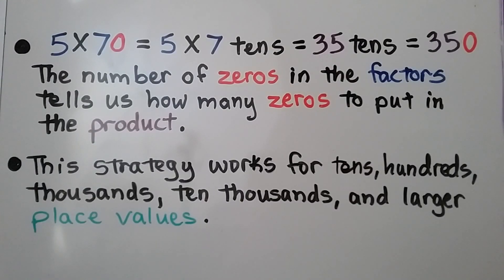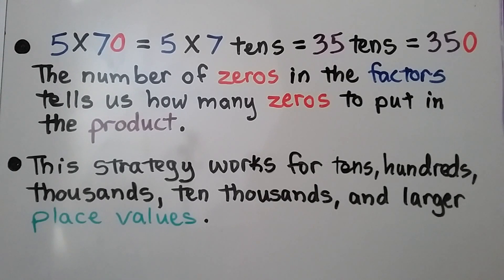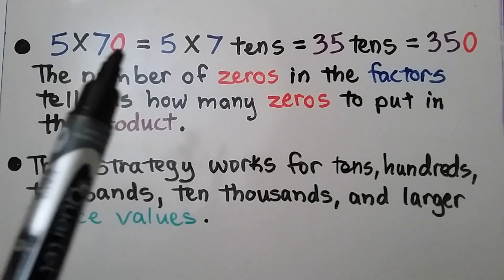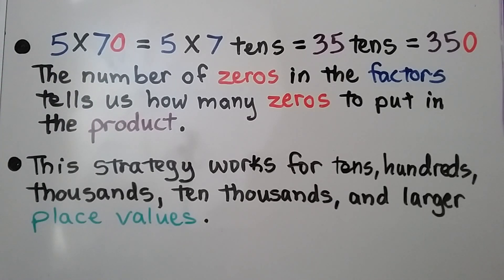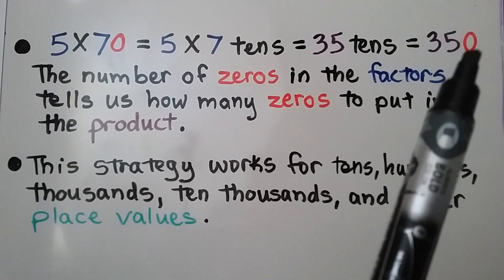5 times 70 equals 5 times 7 tens, which equals 35 tens, which equals 350. The number of zeros in the factors — there's one zero in these factors — tells us how many zeros to put in the product.